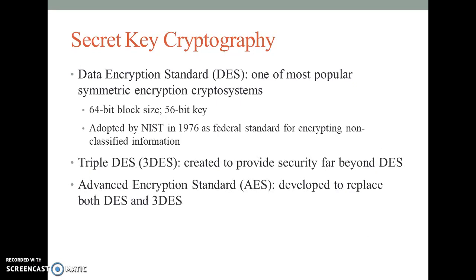There are a number of popular symmetric encryption cryptosystems. One of the most familiar is Data Encryption Standard (DES), developed in 1977 by IBM, based on the Data Encryption Algorithm (DEA). DEA uses a 64-bit block size and a 56-bit key. The algorithm begins by adding parity bits to the key, resulting in 64 bits, then applies the key in 16 rounds of XOR, substitution, and transposition operations. With a 56-bit key, the algorithm has 2^56 possible keys to choose from, or 72 quadrillion.